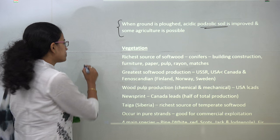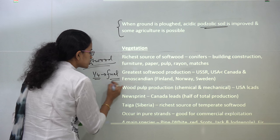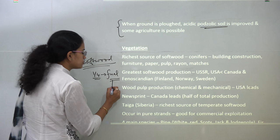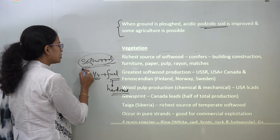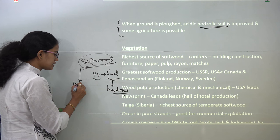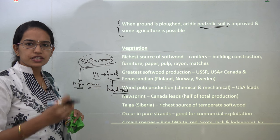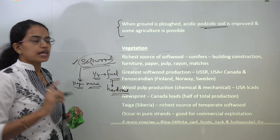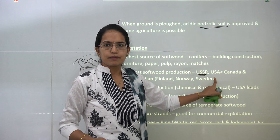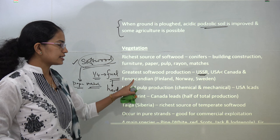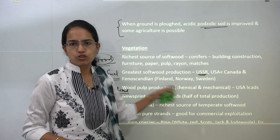From conifers you predominantly get softwood. One fourth of this softwood is used as fuel, while most fuel consumption — three fourths — comes from hardwood. The remaining softwood goes into the paper industry, matches industry, pulp industry, and for forming resins. The highest production of softwood is seen in Russia, followed by America and Canada, and in the Fennoscandian countries — Finland, Norway, and Sweden — where there is also high softwood production.